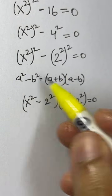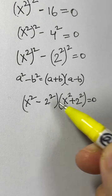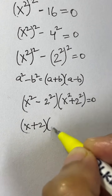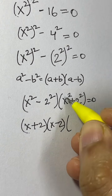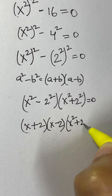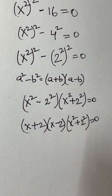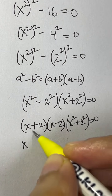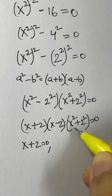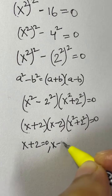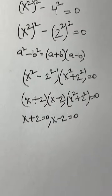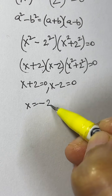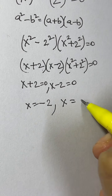We have the same identity again: a² minus b² equals (a+b)(a-b). So we write (x + 2)(x - 2)(x² + 2²) equals 0. This gives us two factors: x + 2 = 0 and x - 2 = 0, giving us two real solutions: x = −2 and x = +2.